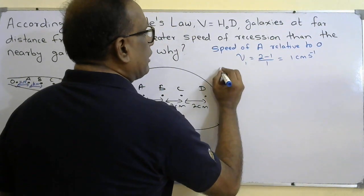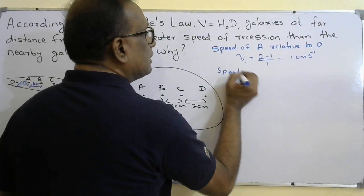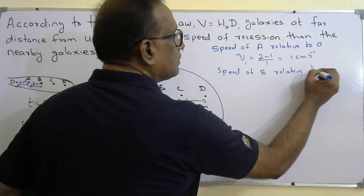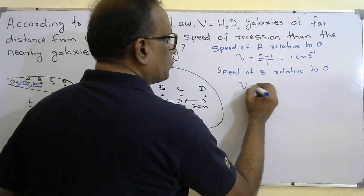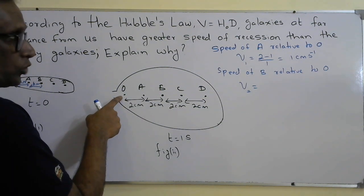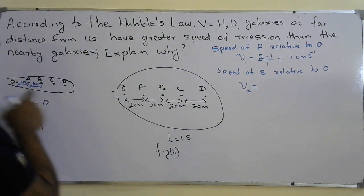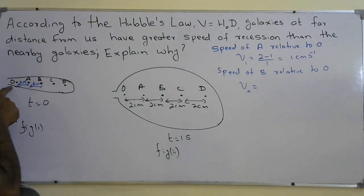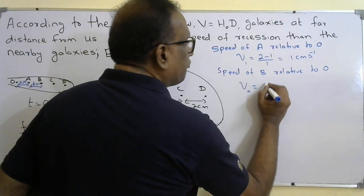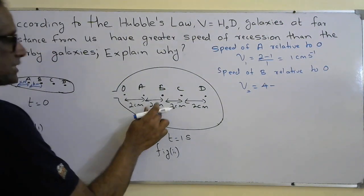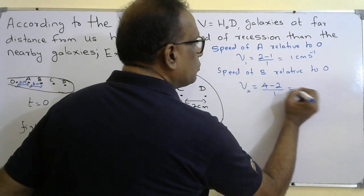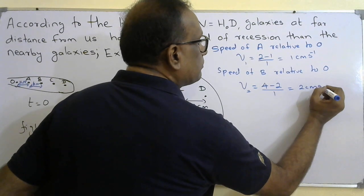The speed of B relative to O — V2 — is calculated as follows. The distance of B from O is now four centimeters; initially it was two centimeters. So the change in distance is four minus two equals two centimeters, divided by one second, giving V2 equals two centimeters per second.